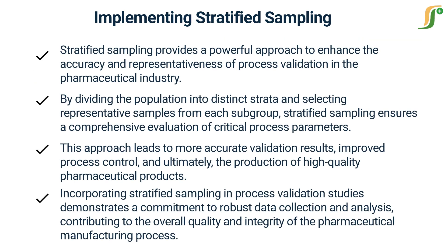Stratified sampling provides a powerful approach to enhance the accuracy and representativeness of process validation in the pharmaceutical industry. By dividing the population into distinct strata and selecting representative samples from each subgroup, stratified sampling ensures a comprehensive evaluation of critical process parameters. This approach leads to more accurate validation results, improved process control, and ultimately the production of high-quality pharmaceutical products. Incorporating stratified sampling in process validation studies demonstrates a commitment to robust data collection and analysis, contributing to the overall quality and integrity of the pharmaceutical manufacturing process.